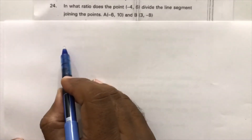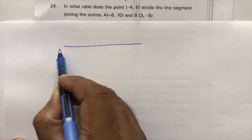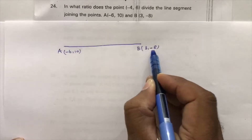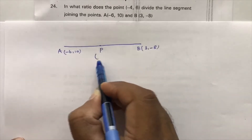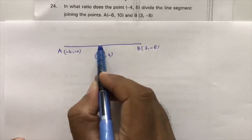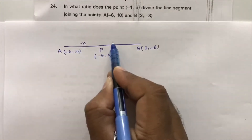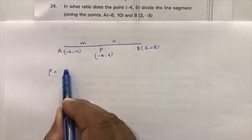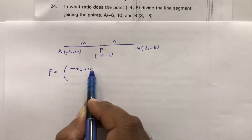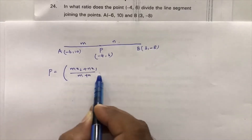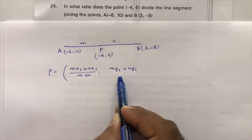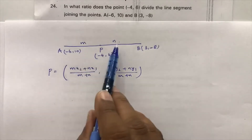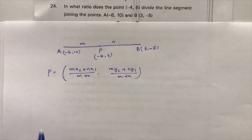In what ratio does the point P(-4, 6) divide the line segment A(-6, 10) to B(3, -8)? To find this ratio, I will take it as m is to n. Now, the section formula for point P is: x = (m·x2 + n·x1) / (m + n), and y = (m·y2 + n·y1) / (m + n). You can also use m1 and m2. Here I am taking the ratio as m is to n.